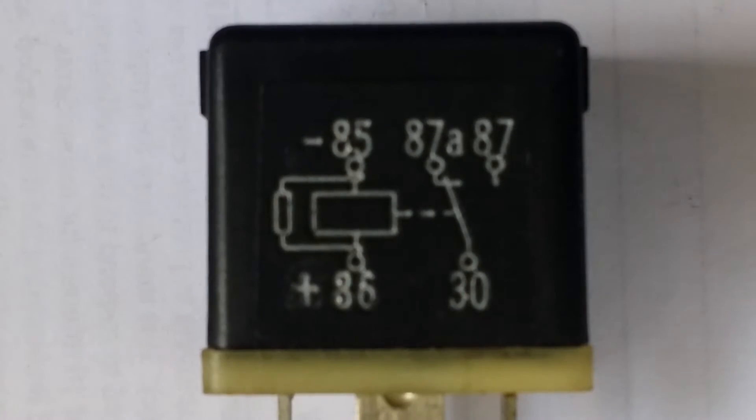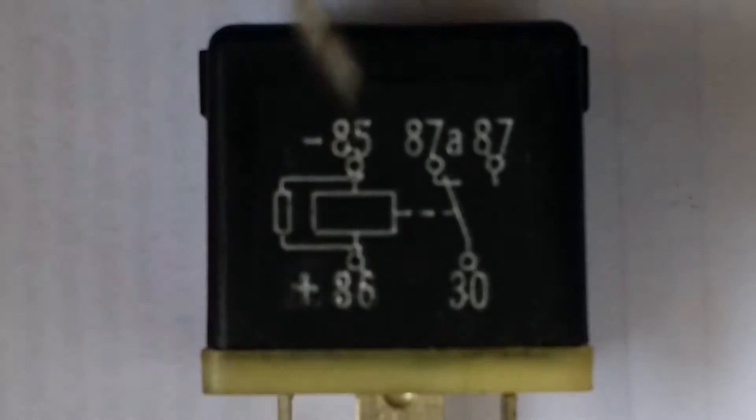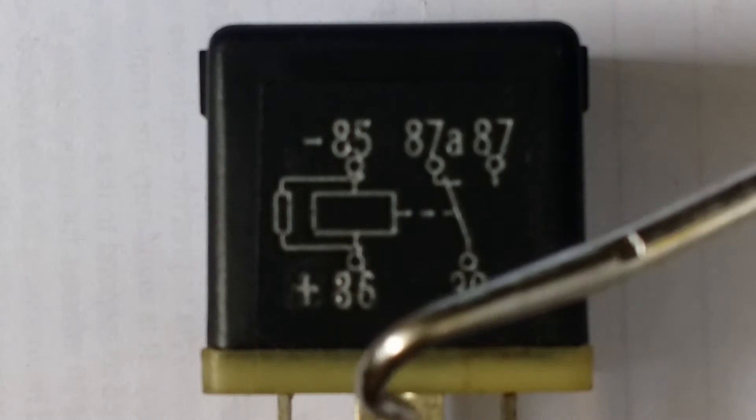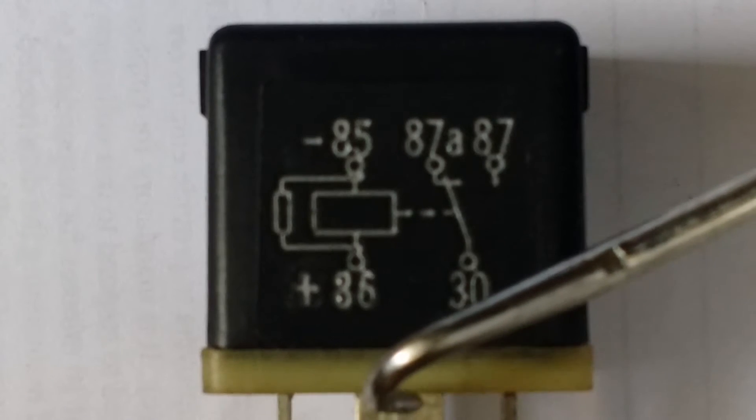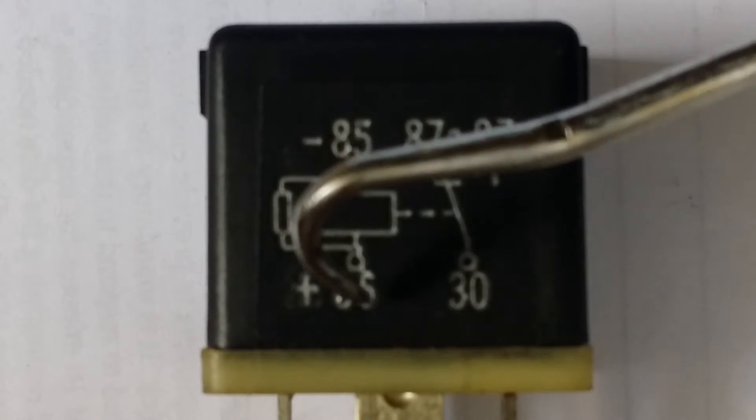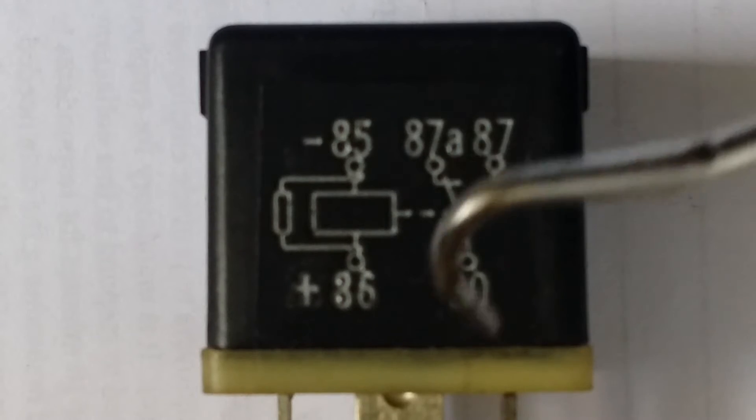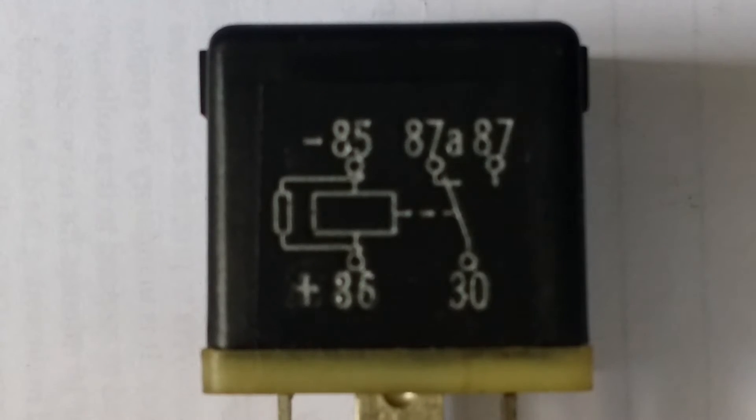I'm going to show you how it's wired. On the back side of this relay, you see your little poles that stick out - your pins. Each one of them pins has a corresponding number. If you flip it over, you can find number 30, number 87, 87a, 85, and 86. Most of them are wired this way.